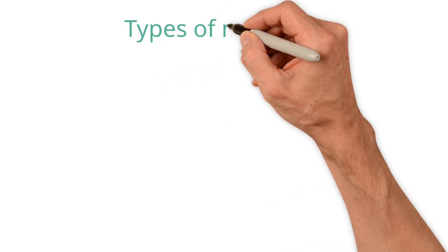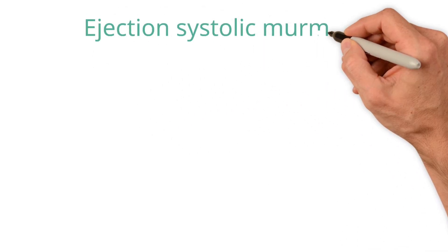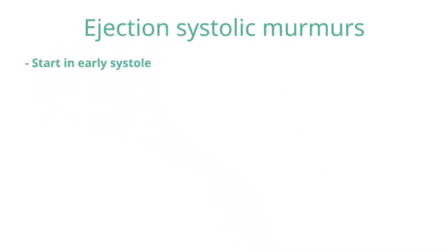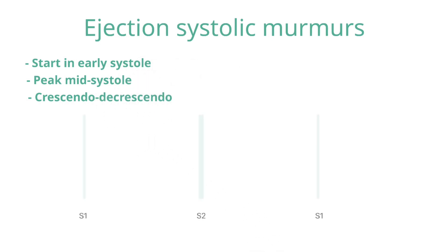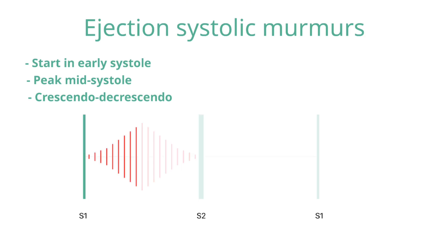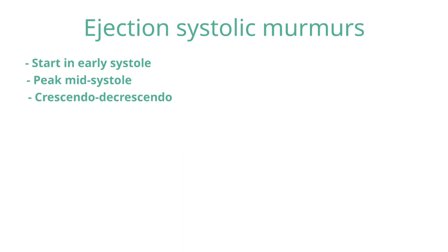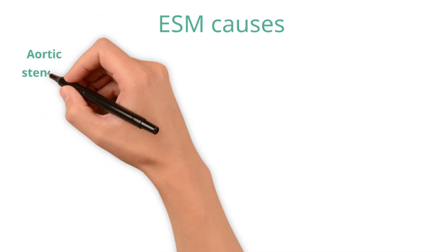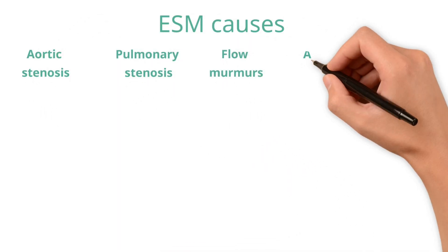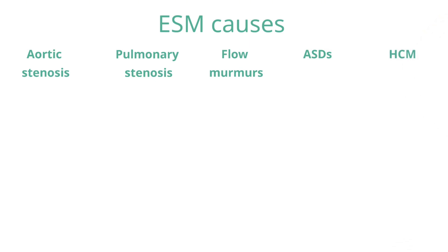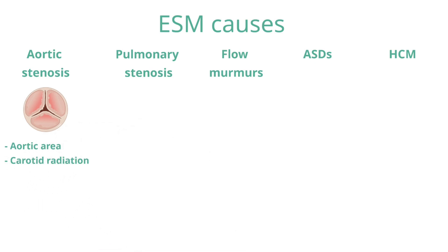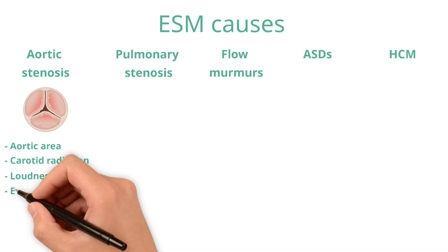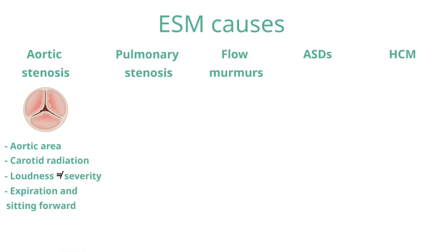Ejection systolic murmurs start in early systole, are initially relatively quiet, get louder until mid systole, and then go quiet again in a crescendo-decrescendo pattern. The main causes include aortic stenosis, pulmonary stenosis, flow murmurs, atrial septal defects, and hypertrophic cardiomyopathy. The aortic stenosis murmur is loudest in the aortic area and radiates to the carotid arteries. It's often loud but loudness does not indicate severity. It is made louder by sitting forward and held expiration.